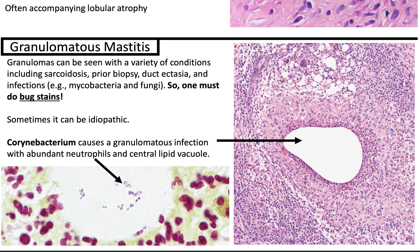Last but not least, let's talk about granulomatous mastitis. It's important to know that granulomas can be seen in a variety of conditions, including sarcoidosis (which is a diagnosis of exclusion), prior biopsy with foreign material, duct ectasia with inspissation, and infections — essentially your histiocytes responding to some entity, whether infectious or some body fluid in the stroma.